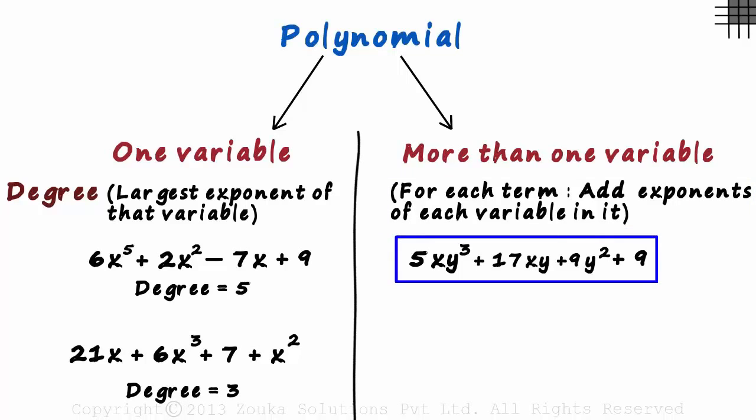How will it work out for the first example? Remember, we have to look at each term individually. Consider the first term, 5xy cubed. We add the exponents of each variable in it. The exponent of x is 1 and the exponent of y is 3.